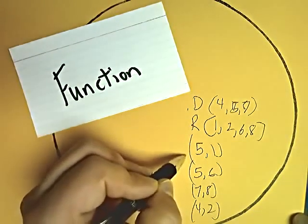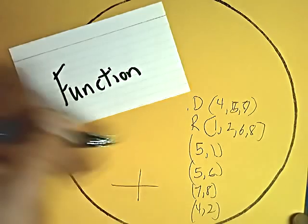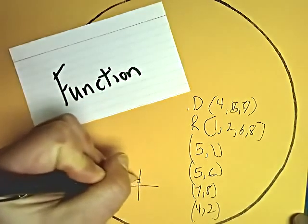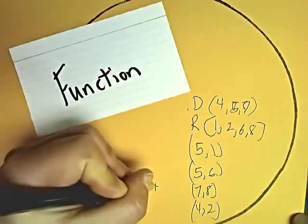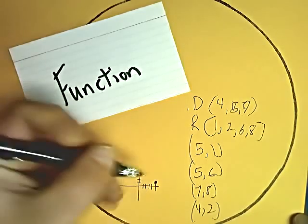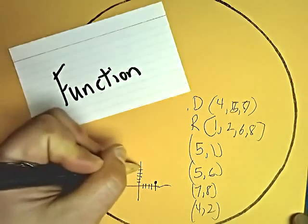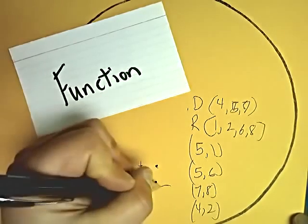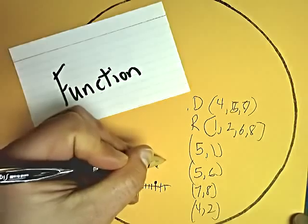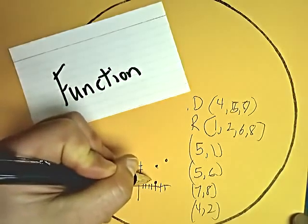Now, in order to tell if they are a function or not, I'm going to graph them. So 1, 2, 1, 2, 3, 4, 5, and then at 5 I'm at 1. And at 5 I'm also at 6. Right here. At 7 I'm at 8, so that's probably up here somewhere. And at 4 I'm at 2, so right there.